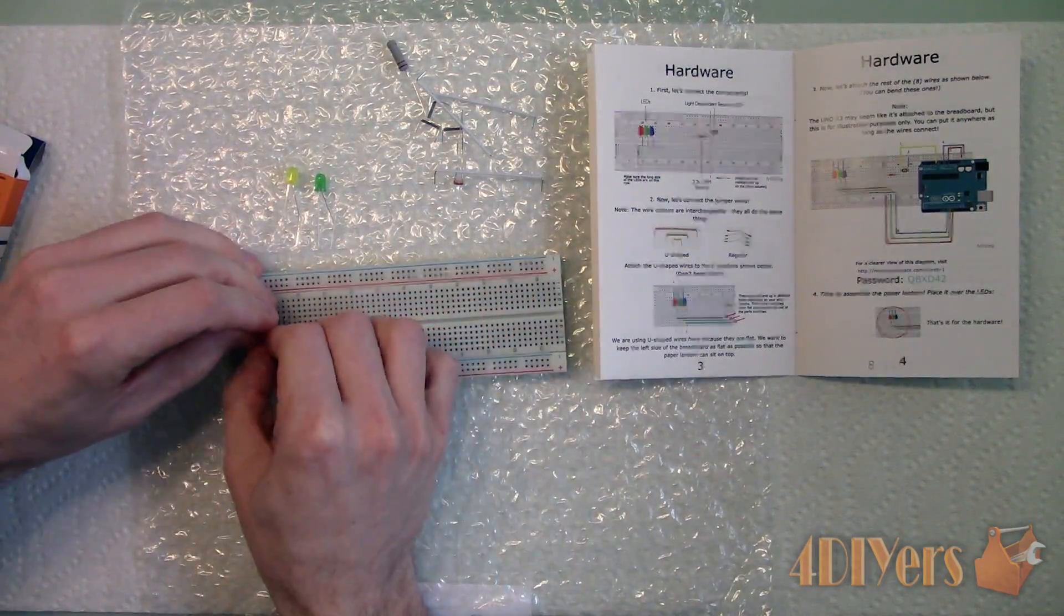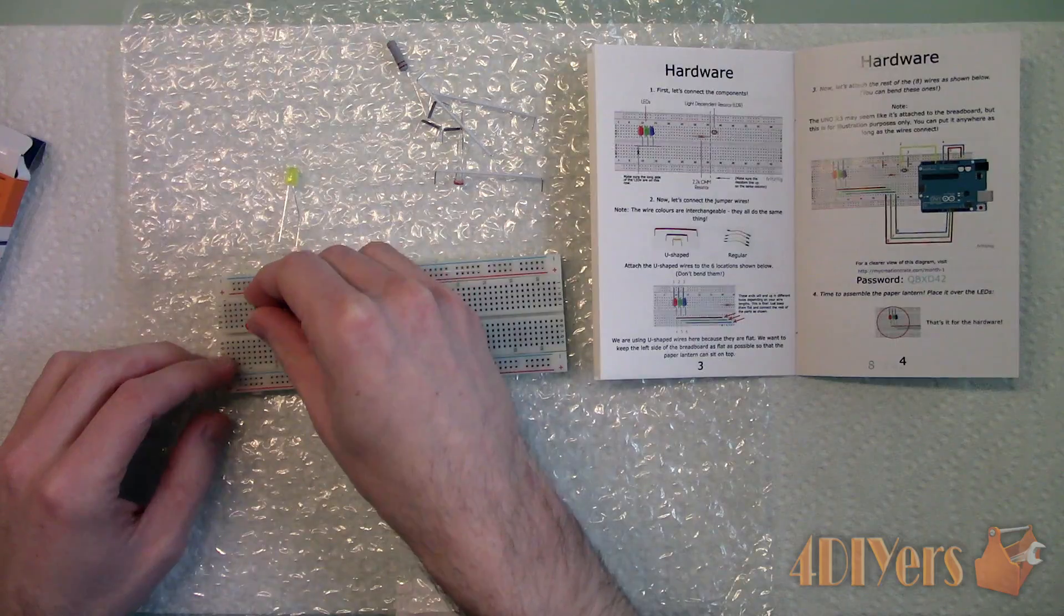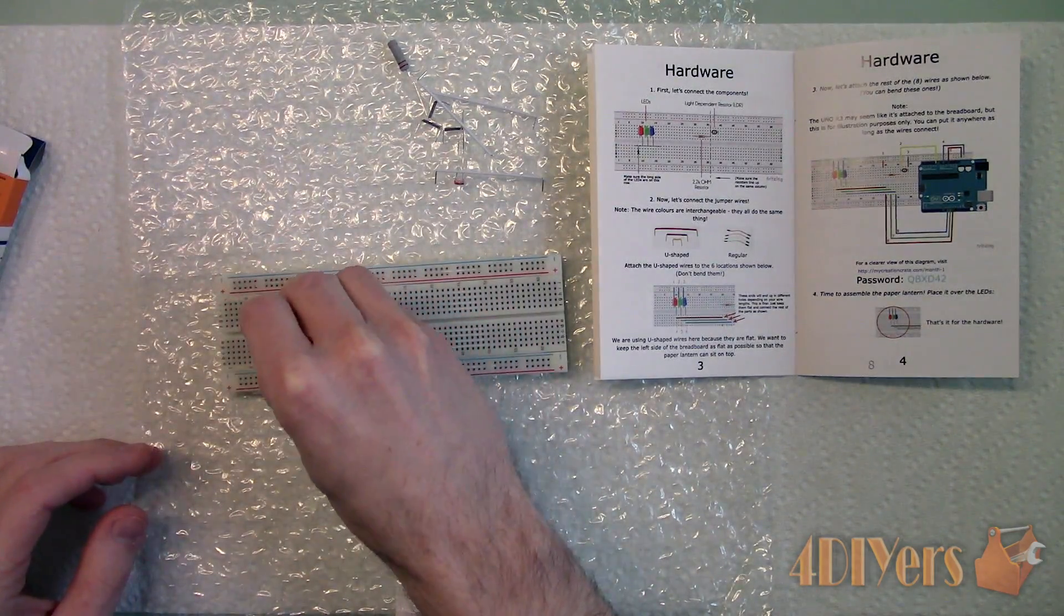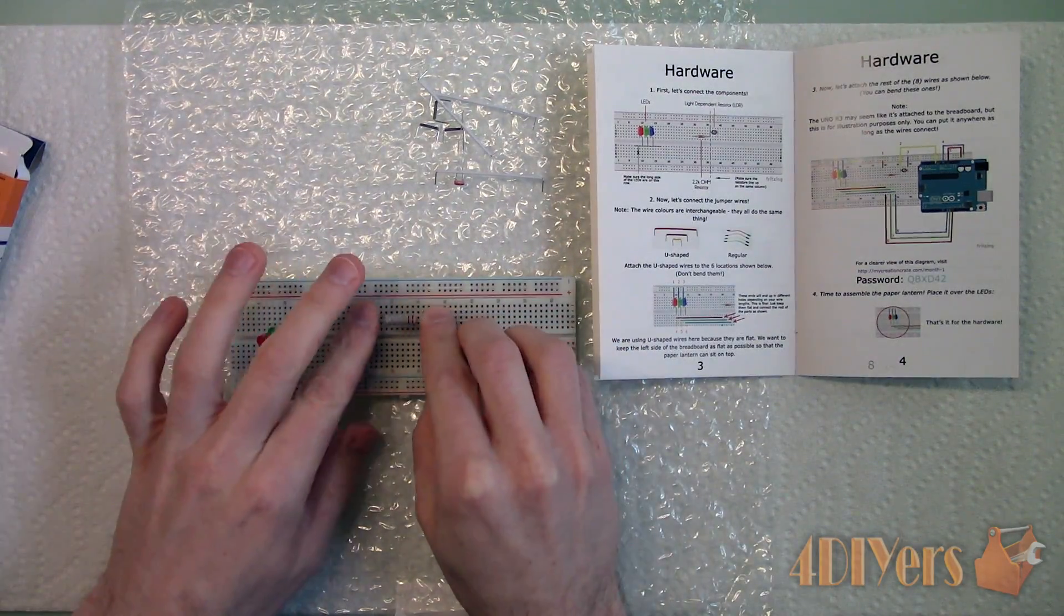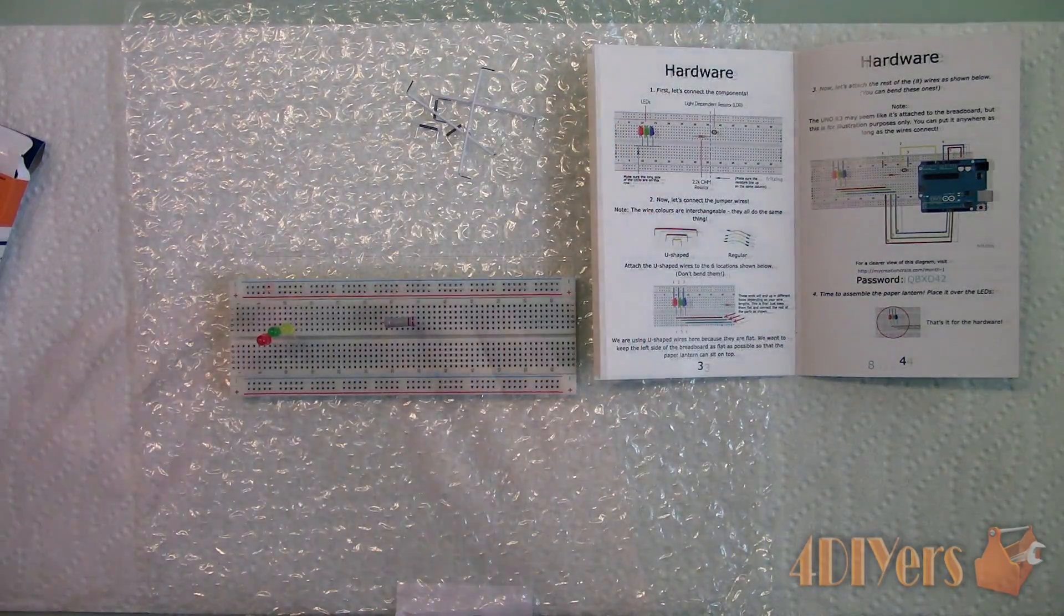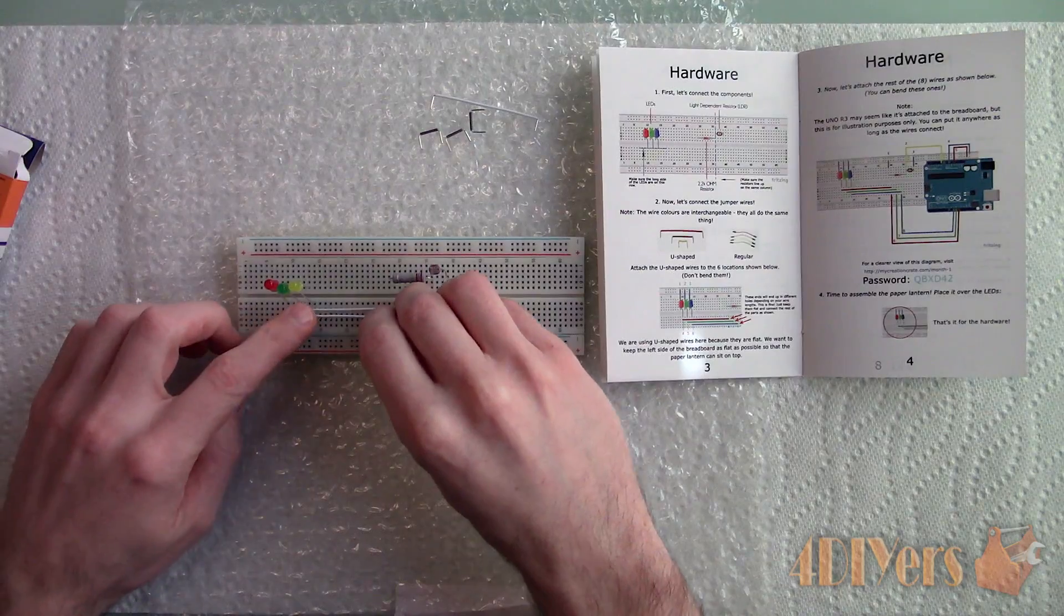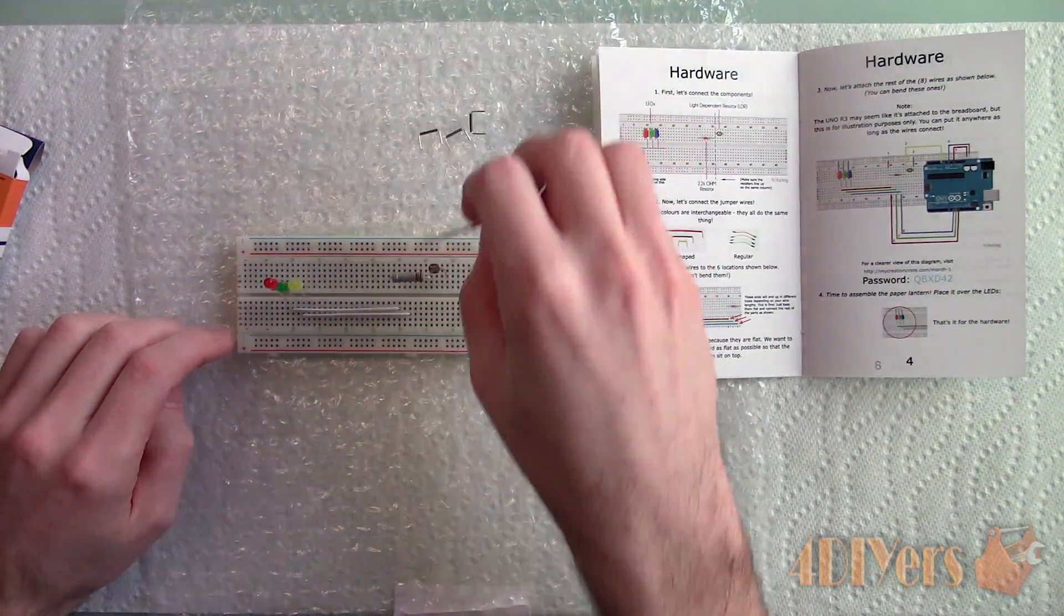Installing the LEDs in the correct location. Make sure you do not mix up the anode and cathode leads. Next installing the resistor and photo resistor. And finally the jumper wires. Now we can move on to connecting the Arduino board.